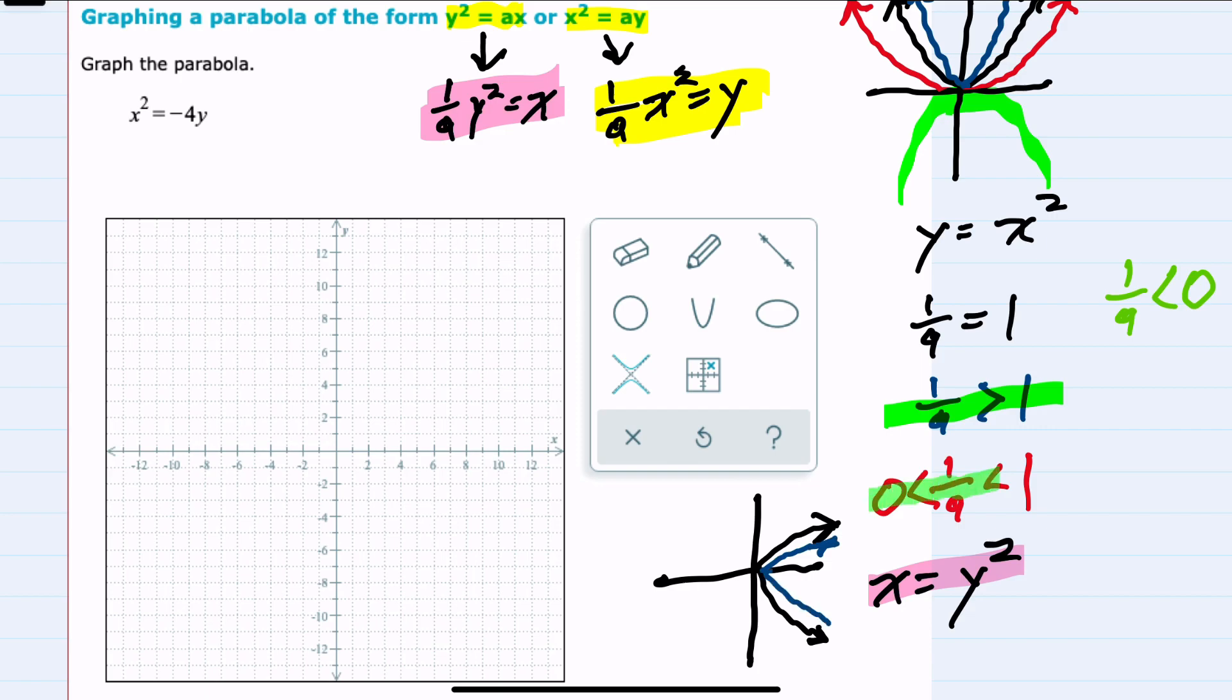When 1 over a is a positive fraction, it becomes wider. And when 1 over a is negative, the same thing happens, but it now opens to the left.